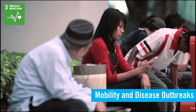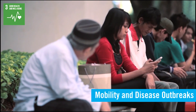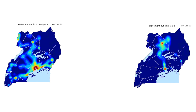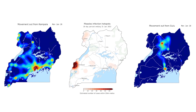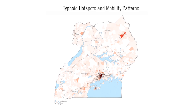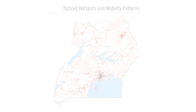Data derived from aggregated mobile phone usage can be valuable in understanding or predicting the spread of a disease outbreak. These maps show how population movement patterns, as derived from privacy-protected mobile phone data, related to the spread of measles during a 2013 outbreak. Analyses like these can alert health officials to potential new infection hotspots, like the typhoid hotspot shown here, and inform response strategies.